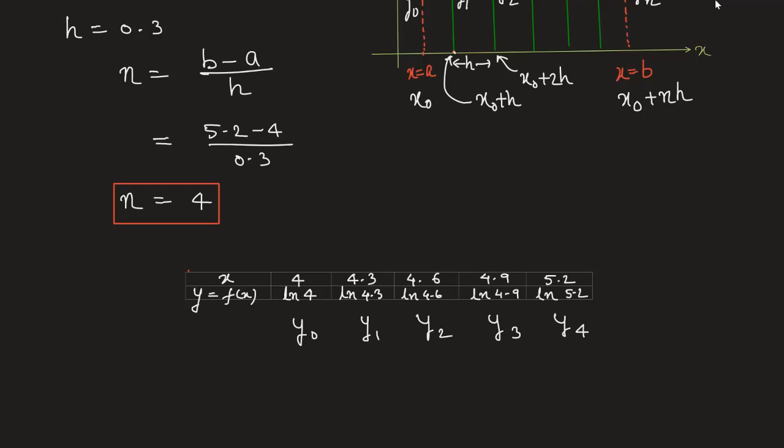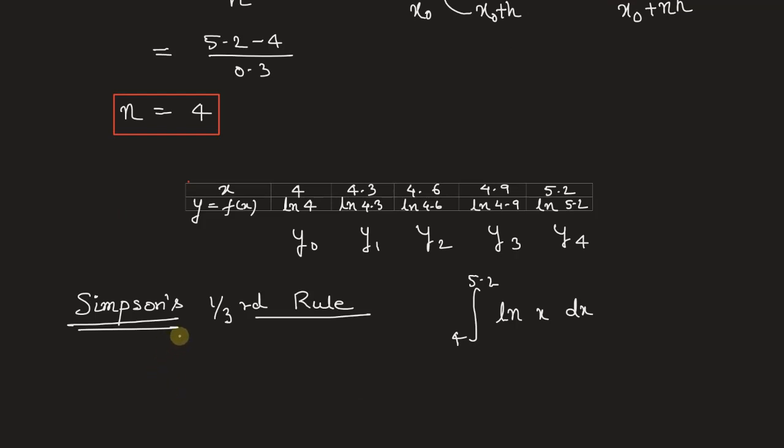To calculate the value of the integral from 4 to 5.2 of ln x dx, Simpson's one-third rule can be written as: integral from a to b of f(x) dx equals...